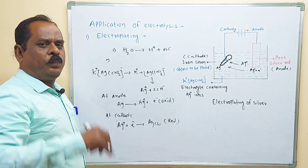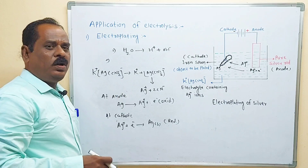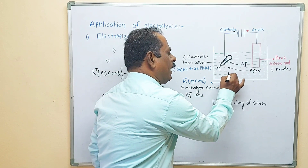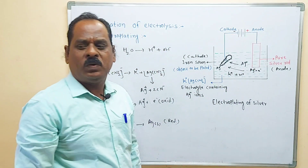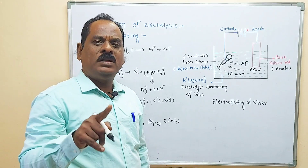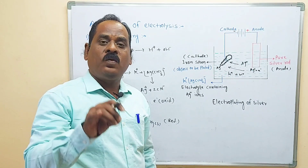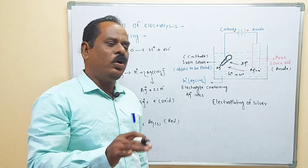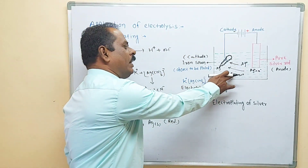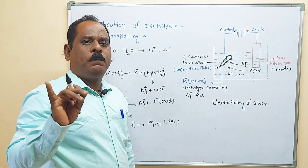Remember one important point: in this solution three types of positive ions are present — hydrogen ions, potassium ions, and silver ions. Only silver ions are attracted towards the cathode. Potassium is a highly reactive metal and hydrogen is also highly reactive, so due to their high reactivity, depositing these ions requires high voltage. At low voltage, only silver ions are deposited at the cathode, while potassium and hydrogen ions remain in the solution.